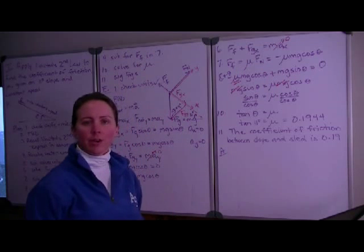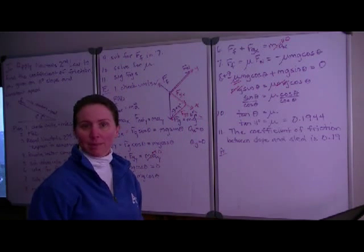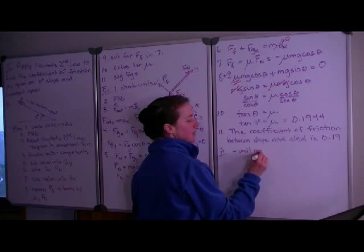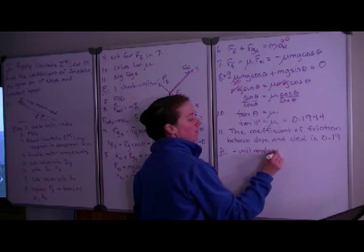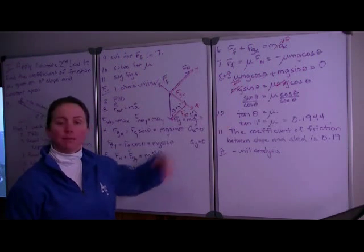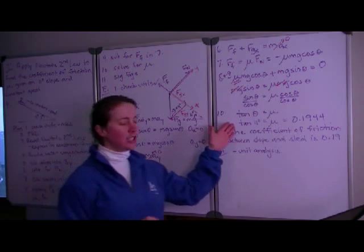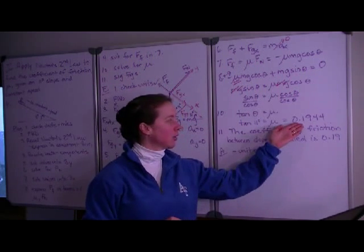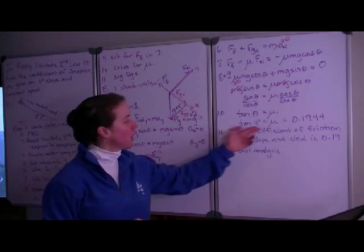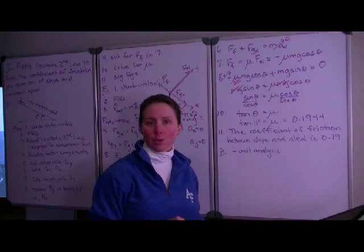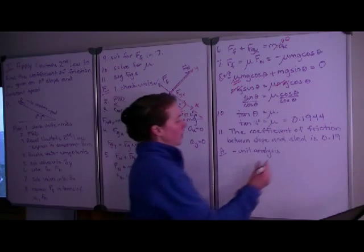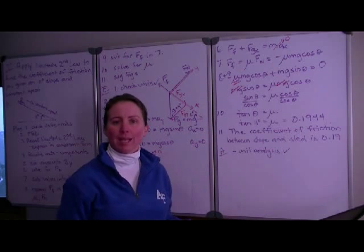Before we conclude, let's assess our answer to see whether it makes sense. Always a good idea to start with unit analysis. We avoided using numerical values until the very end and only had to substitute one value. The tangent of 11 degrees, 0.1944, has no units — and the coefficient of friction is also a unitless quantity, so those two things agree.